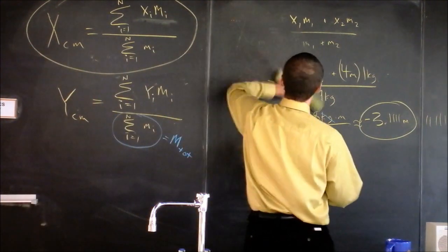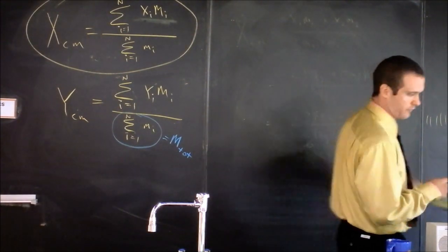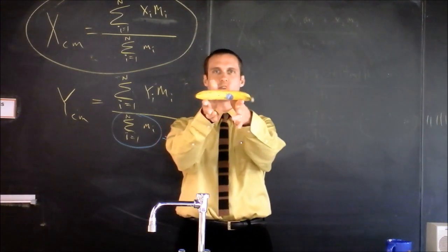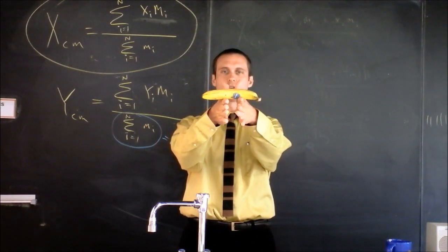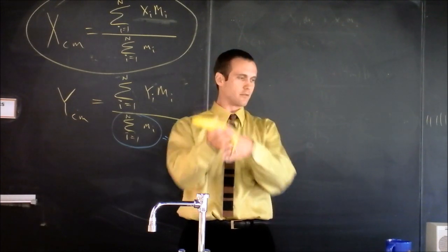So center of mass is interesting for certain objects. It's not interesting for spheres. It's relatively interesting for bananas. You can find the center of mass of the banana by moving your fingers closer and closer together. The balance point will indicate the center of mass.